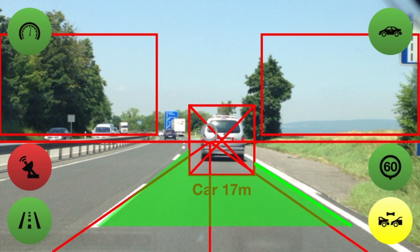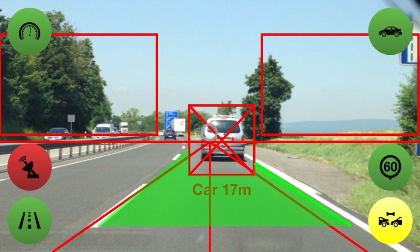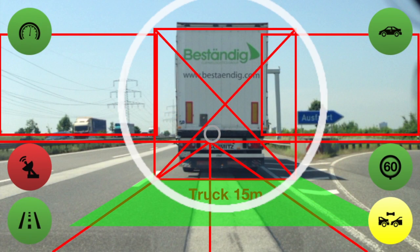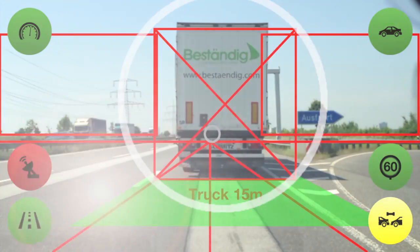As the last of the main systems, the distance control is represented by a symbol with two cars. If the distance to the vehicle in front is below a critical threshold, the driver is both visually and acoustically warned.